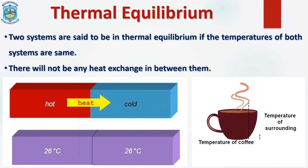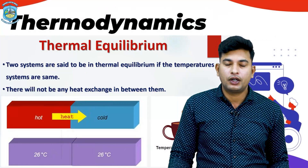Take the example of a cup of coffee: the coffee is at a higher temperature compared to the surrounding area. As per the basic thermodynamic rule, the coffee will get cold because the surrounding temperature is lower, and heat transfers from the coffee toward the surroundings. The temperature of the surroundings goes up and the coffee's temperature goes down — this is why coffee or tea gets cold if not consumed, based on the phenomenon of thermal equilibrium.